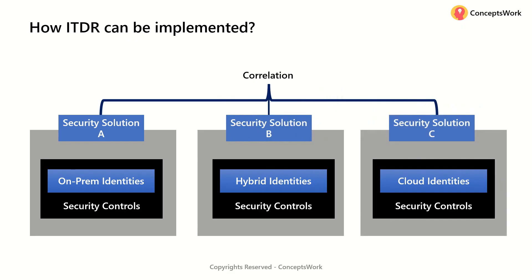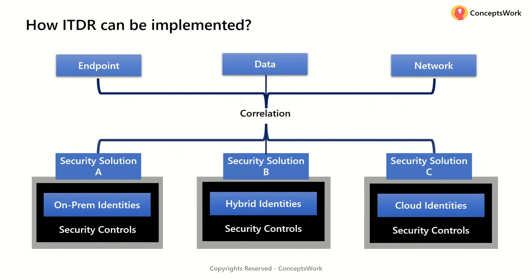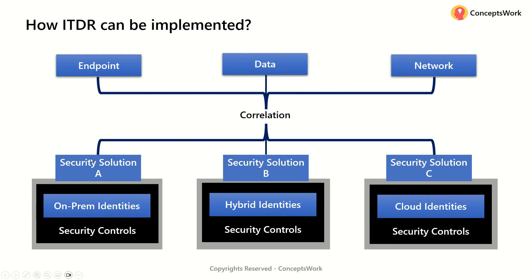Another scenario — though rare, seen only in a few large enterprises — is having different solutions for all three identity types. Regardless of how many identity security solutions you have, you need correlation between them. Beyond the identity layer itself, insights from identity should also be correlated with other digital states: for example, if something happens with a specific account and the endpoint that user was on detects malware, that should be correlated too. If you have these practices in place, then fundamentally you have ITDR.